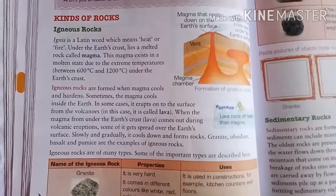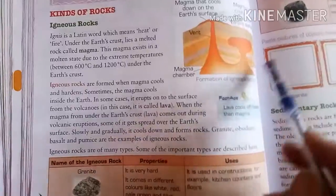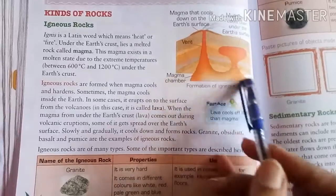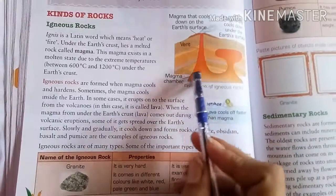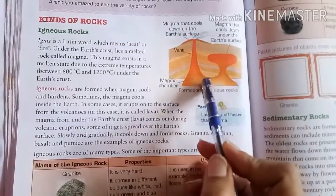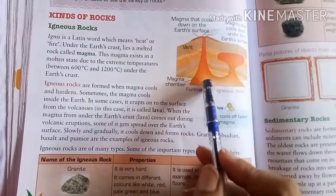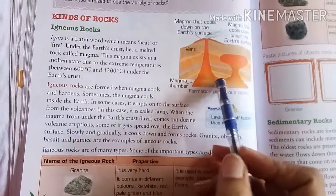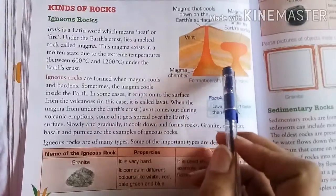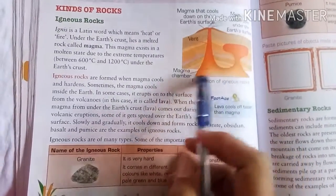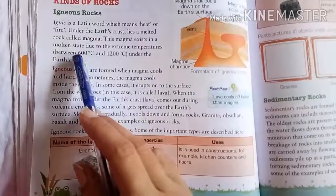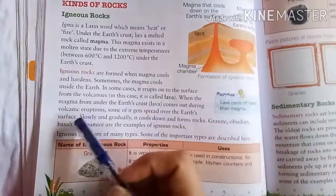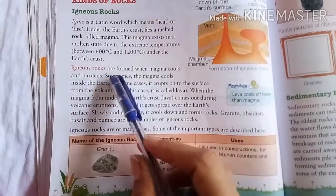Magma kya hai? Under the earth's crust, earth crust ke niche magma lie kerta hai jo ek melted form mein hota hai — pigla hua form mein hota hai, use magma bolte hain. Ye magma ek melted form mein, molten state mein hoti hai, aur is temperature 600 degree Celsius to 1200 degree Celsius hoti hai.